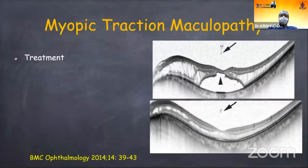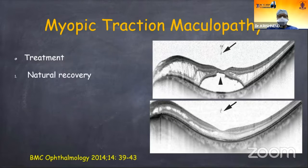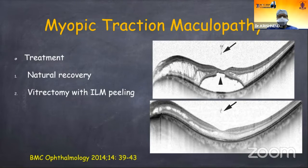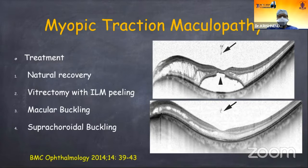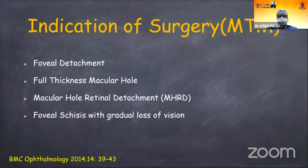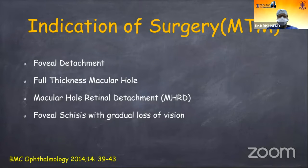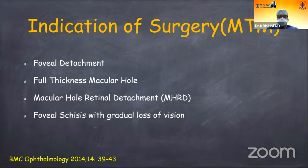For treatment options of myopic traction maculopathy, it can resolve on its own. If it doesn't resolve or progresses, we have to opt for vitrectomy with ILM peeling, macular buckling, or suprachoroidal buckling. Surgical indications include: foveal detachment, full thickness macular hole, macular hole-related retinal detachment in a myopic patient, or foveal schisis with gradual loss of vision.